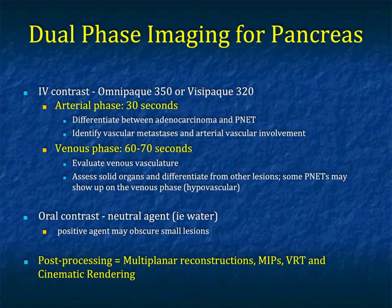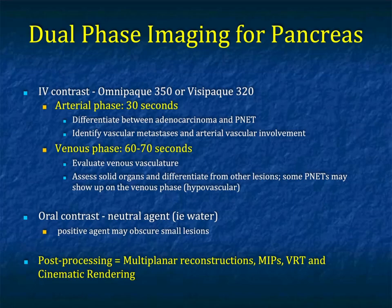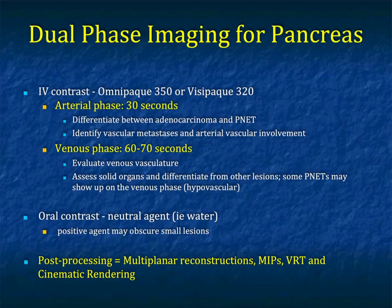The arterial phase will typically show the vascular lesion, while adenocarcinomas are going to be hypovascular. The venous phase is critical for staging. Most of the time, liver mets from neuroendocrine tumors are better seen on arterial phase, but can also be seen well on venous phase. For oral contrast, we want a neutral agent to better see smaller tumors. Post-processing requires multi-planar imaging, MIP imaging, volume rendering, and cinematic rendering.